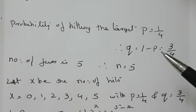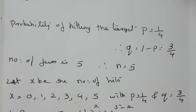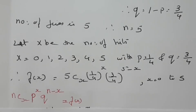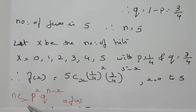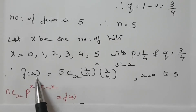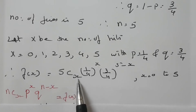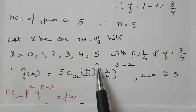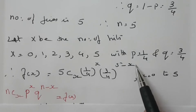We can compare this situation with binomial distribution, which has two outcomes — either success or failure — and n number of uniform independent repetitions. The PDF of a binomial random variable is nCx * p^x * q^(n−x). Therefore, here we write: f(x) = 5Cx * (1/4)^x * (3/4)^(5−x), where x varies from 0 to 5.